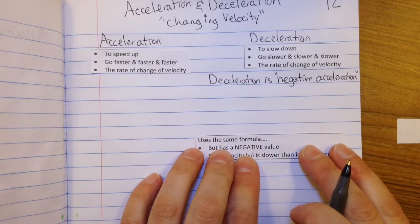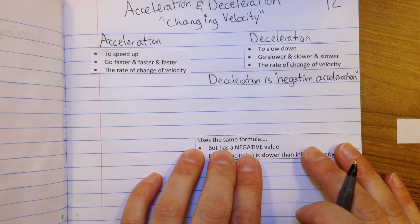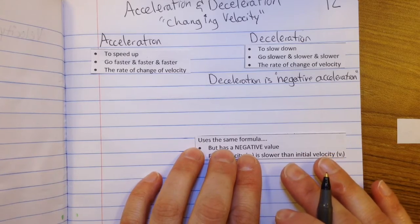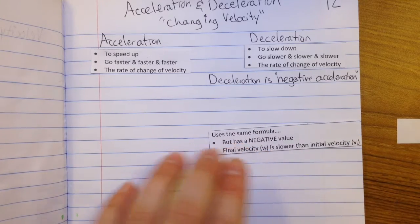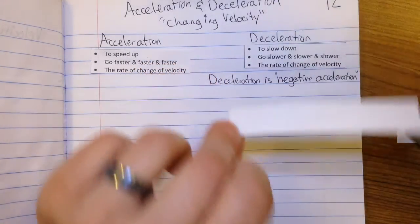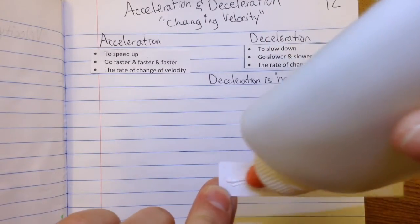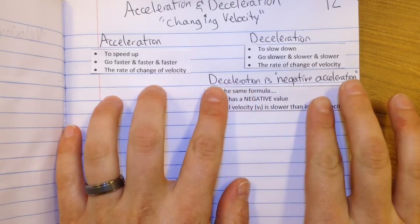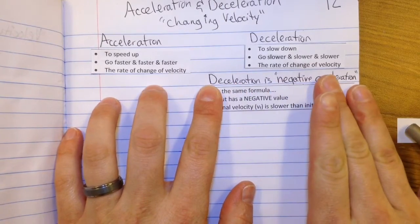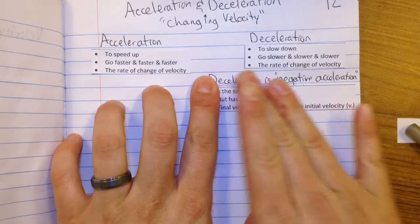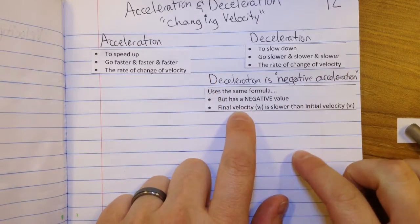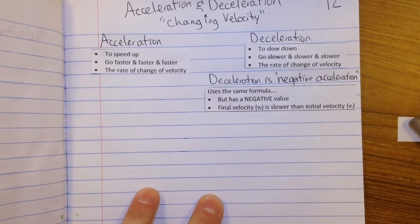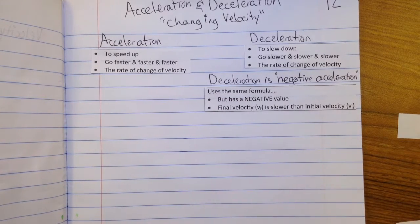Physicists — genuine physicists, nerds — they won't say it's decelerating. They'll say it has a negative acceleration. They're really weird about that. But go ahead and glue that piece of paper underneath there. Negative acceleration just means you're decelerating. We use the same formula; it just has a negative value. What that really means is that when we're talking about the final velocity we measure, it's actually slower than the initial velocity, which will make sense once we talk about the formula.